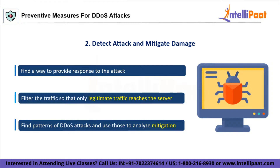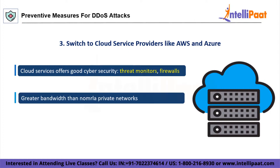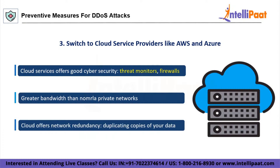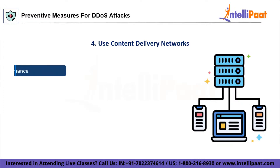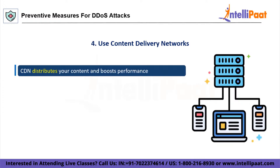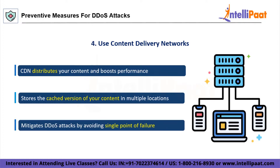The next tip is to switch to cloud service providers like AWS and Azure. Cloud services offer a high level of cyber security including firewalls and threat monitoring software that can protect your assets and networks from DDoS criminals. The cloud also has greater bandwidth than most private networks and is unlikely to fail under high pressure. Additionally, reputed cloud providers offer network redundancy, duplicating copies of your data, systems, and equipment. You can also use content delivery networks with redundant servers. A CDN distributes your content and boosts performance by minimizing the distance between your resource and end-user, storing cached versions of your content in multiple locations, and mitigating DDoS attacks by avoiding a single point of failure.